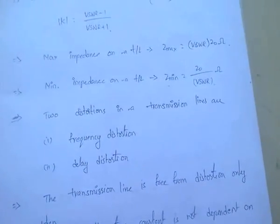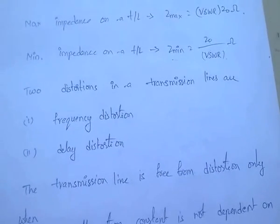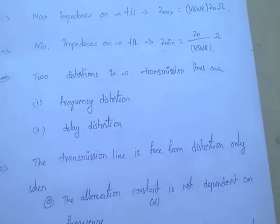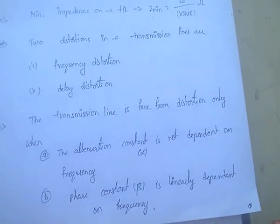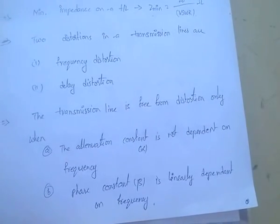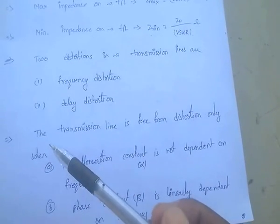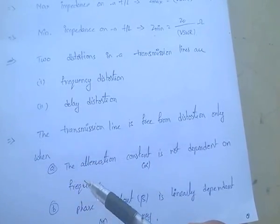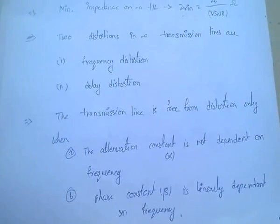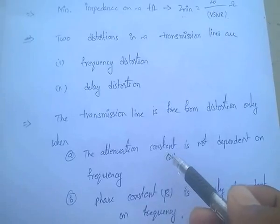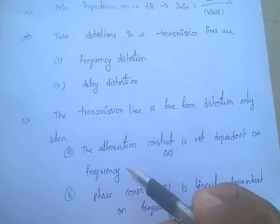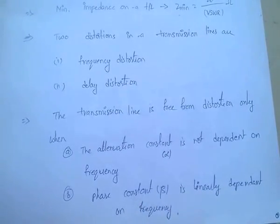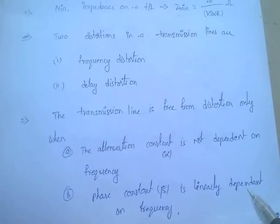Coming to distortions in transmission lines. There are mainly two distortions: one is frequency distortion and second is delay distortion. For a distortion-less line, two conditions must be met: the attenuation constant alpha is not dependent on frequency, and the phase constant beta is linearly dependent on frequency.